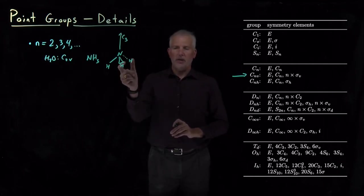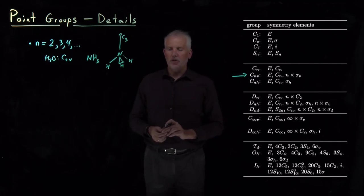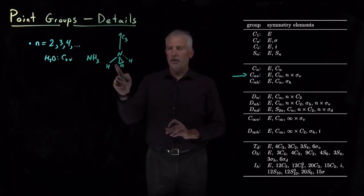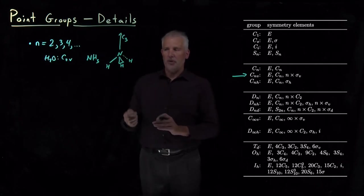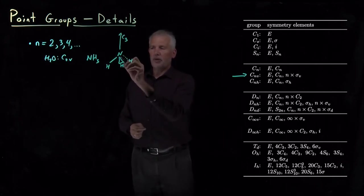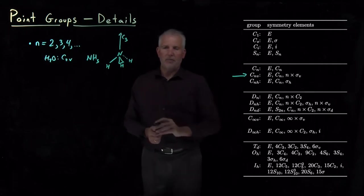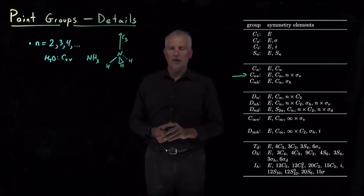I can rotate a third of the way around and not change the molecule. It's also going to have three different vertical reflection planes that I won't attempt to draw. But if I bisect the molecule along this NH bond or this NH bond or this NH bond, each of those is a different vertical reflection plane.